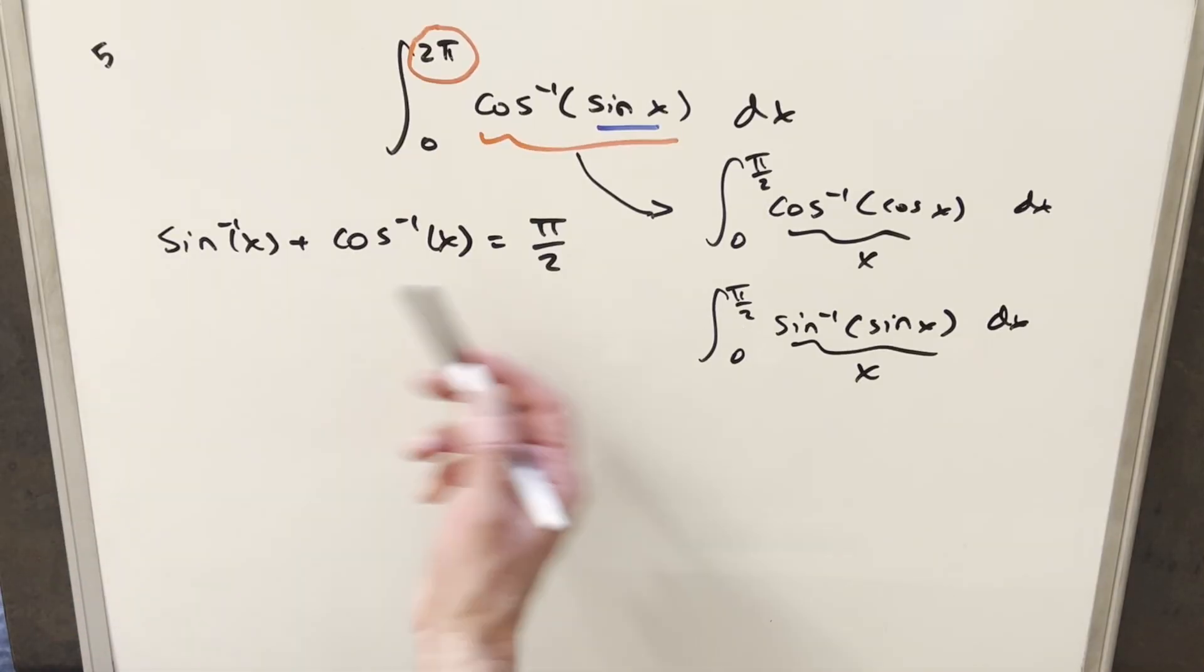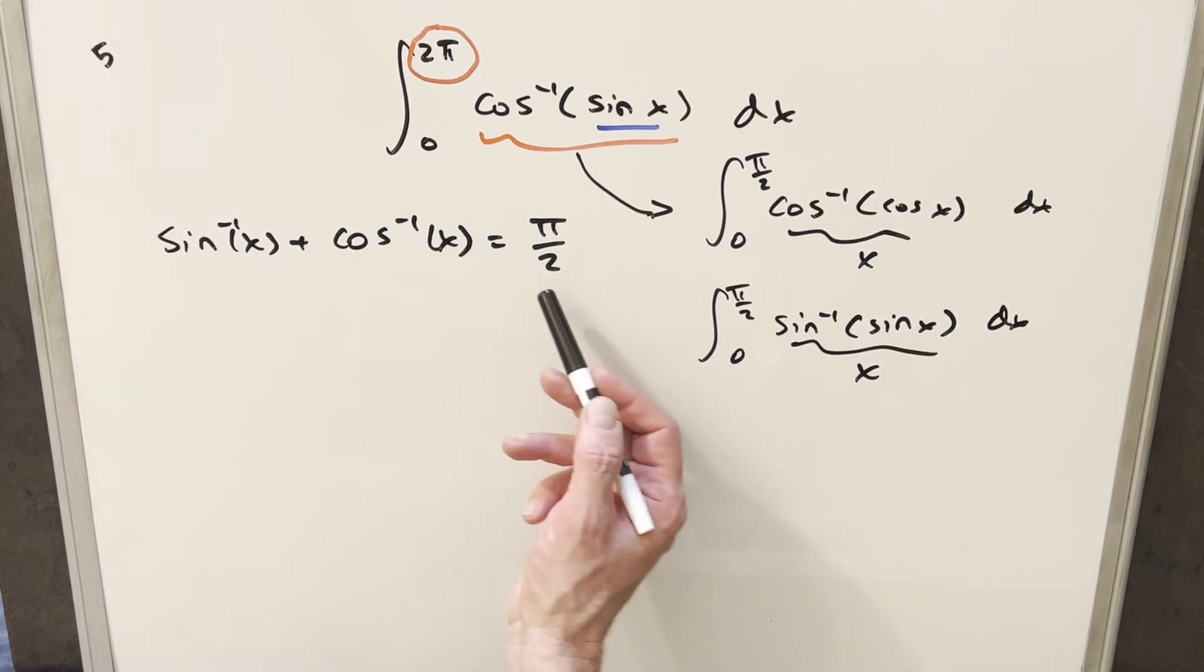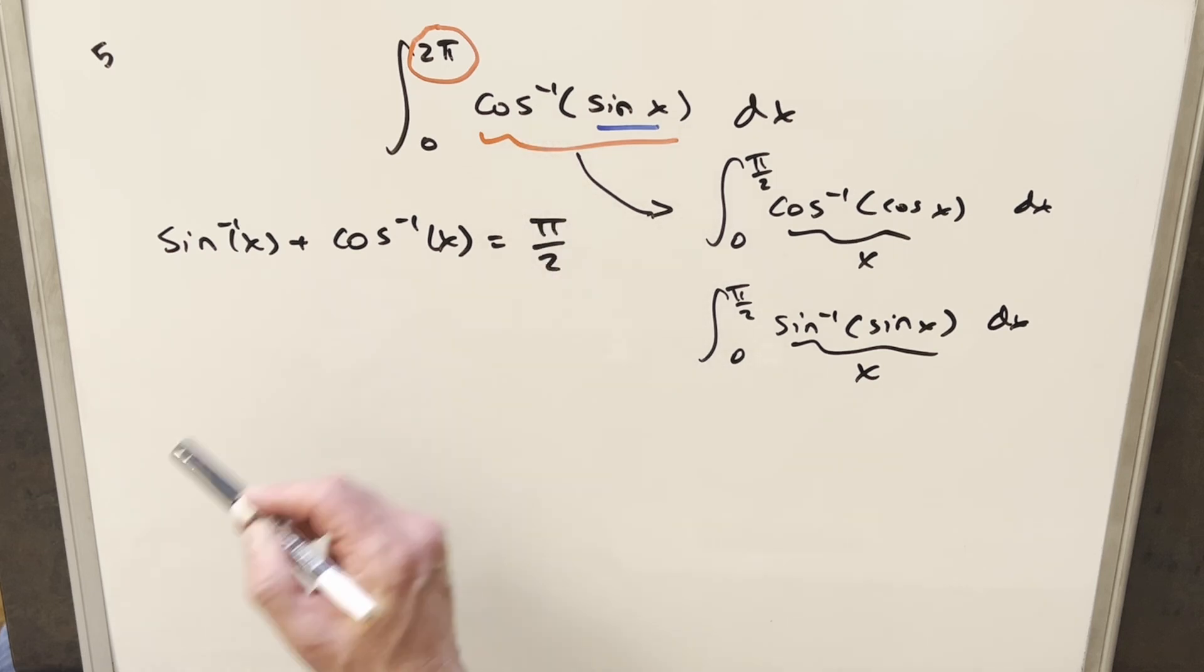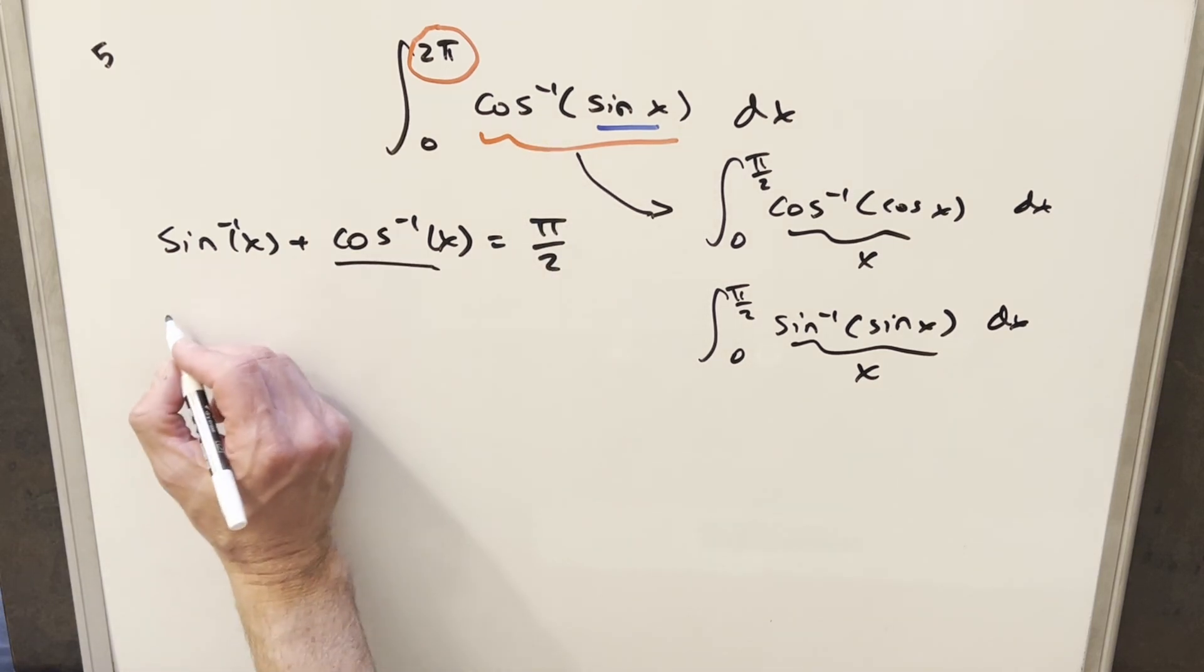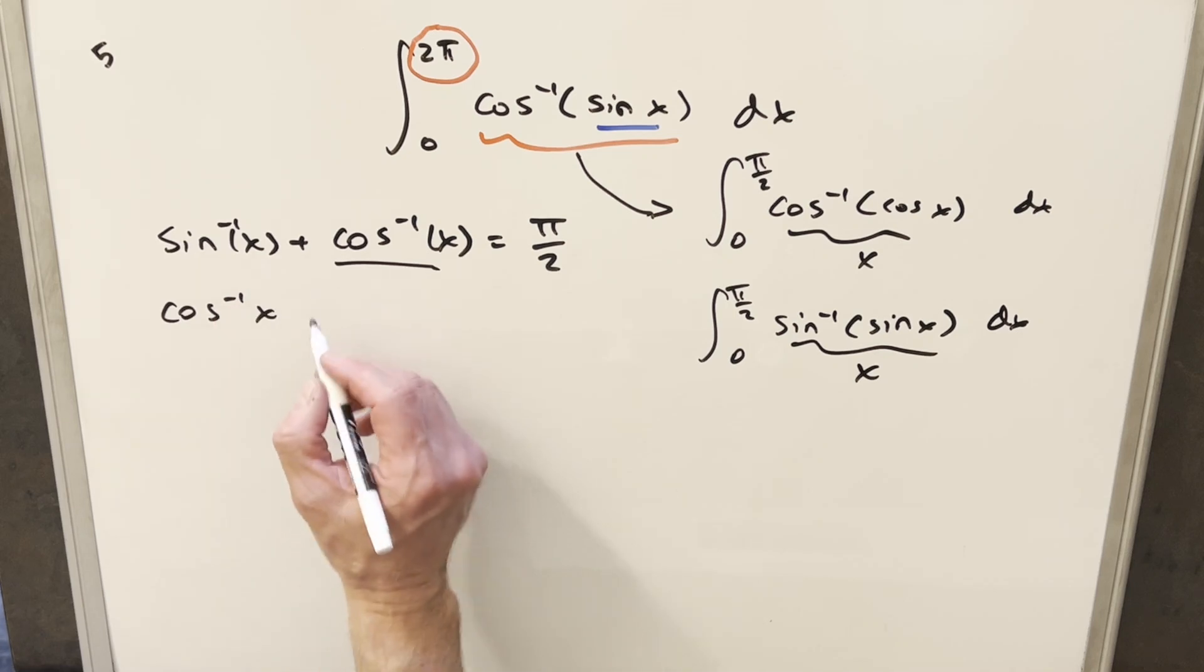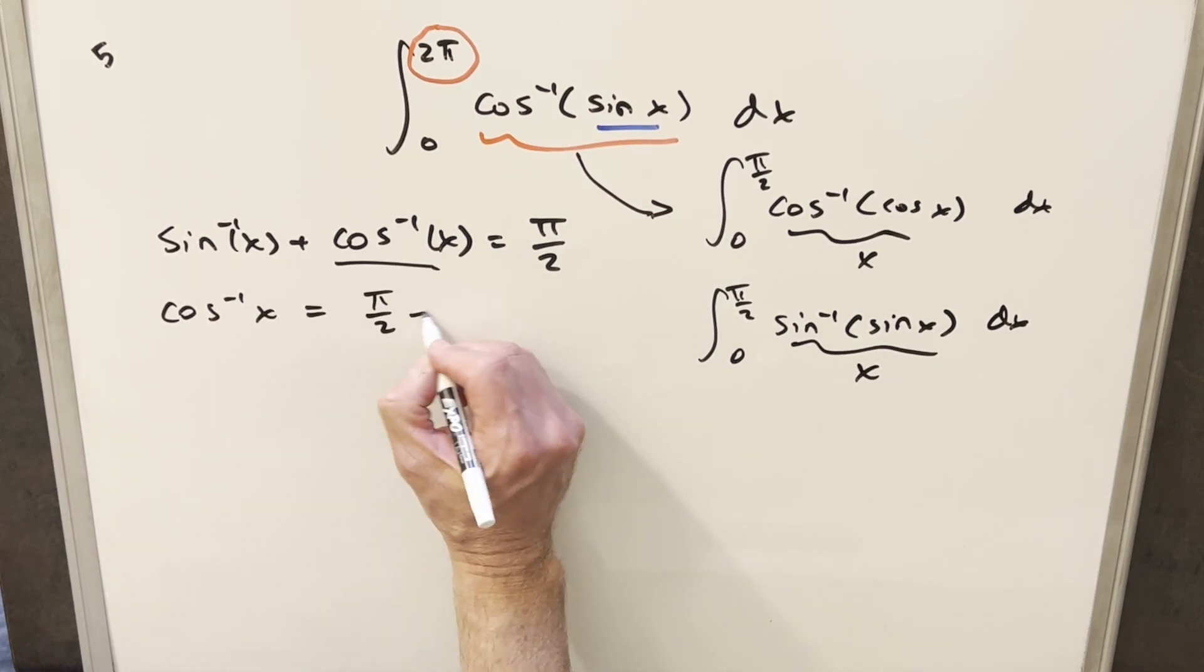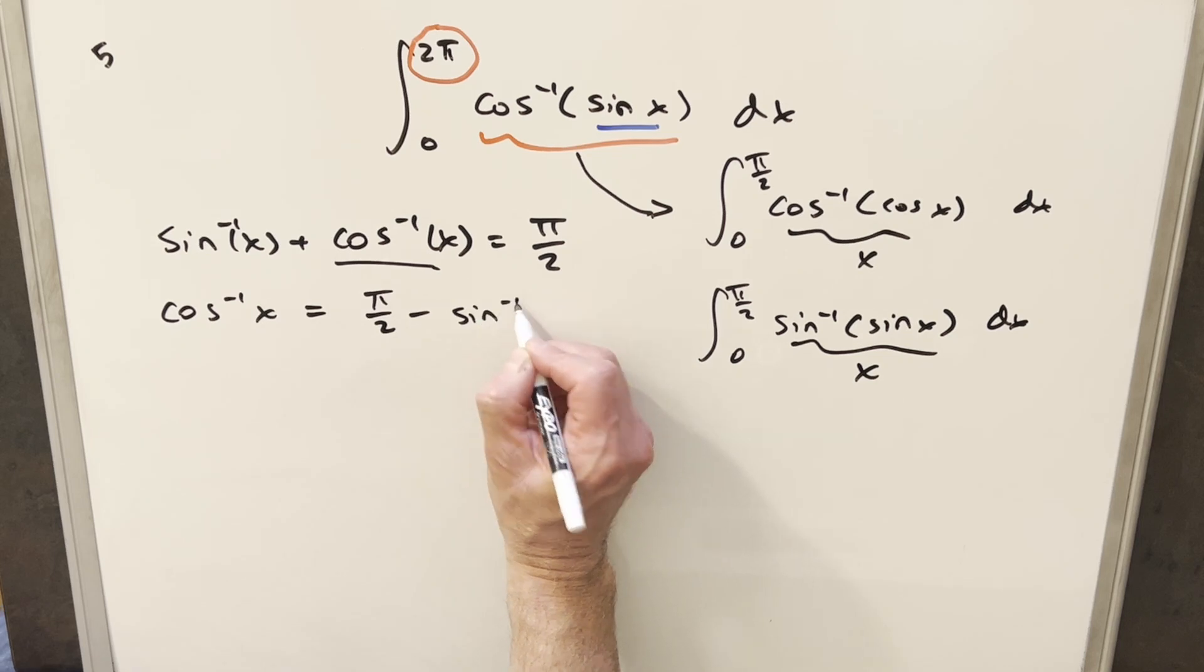So we'll start with this identity here related to the complementary angle formula: arcsin(x) plus arccos(x) equals pi over two. Well, in our expression, we have arcosine. So really what I want to do is isolate this arccos term. If I just rearrange it, subtracting arcsine on both sides, we end up with arccos(x) equals pi over two minus arcsin(x).